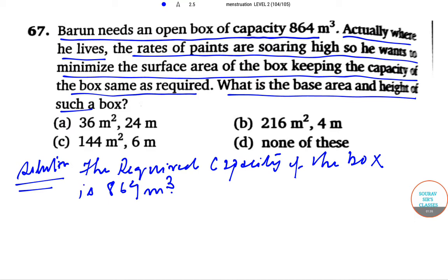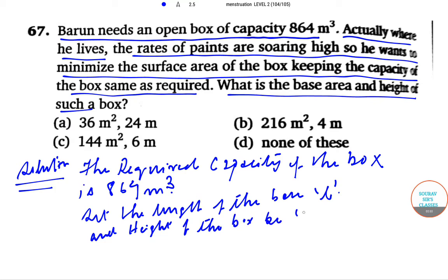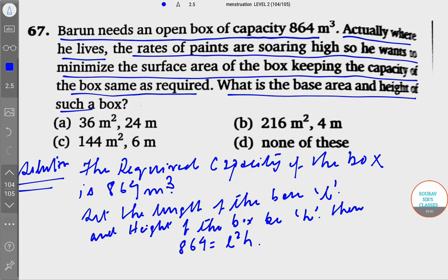Let the length of the base be L and height of the box be H. Now, the volume equation gives us 864 equals L squared times H. The height of the base multiplied by the height gives the volume, so 864 equals L squared into H.